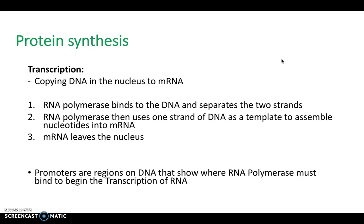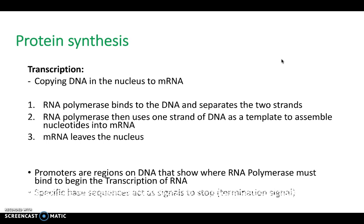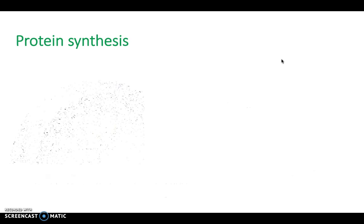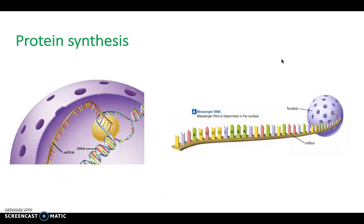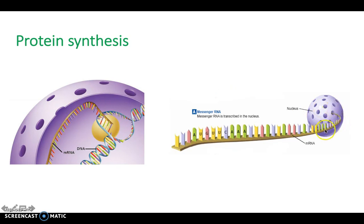Bear in mind that throughout this process, promoters are regions of DNA that show where RNA polymerase must bind to begin the transcription of RNA. In picture form, this is basically what happens inside the nucleus: the DNA is breaking up and a complementary strand of mRNA is forming, which is much lighter and can easily leave the nucleus through one of the pores. The mRNA then travels outside of the nucleus into the cytoplasm.